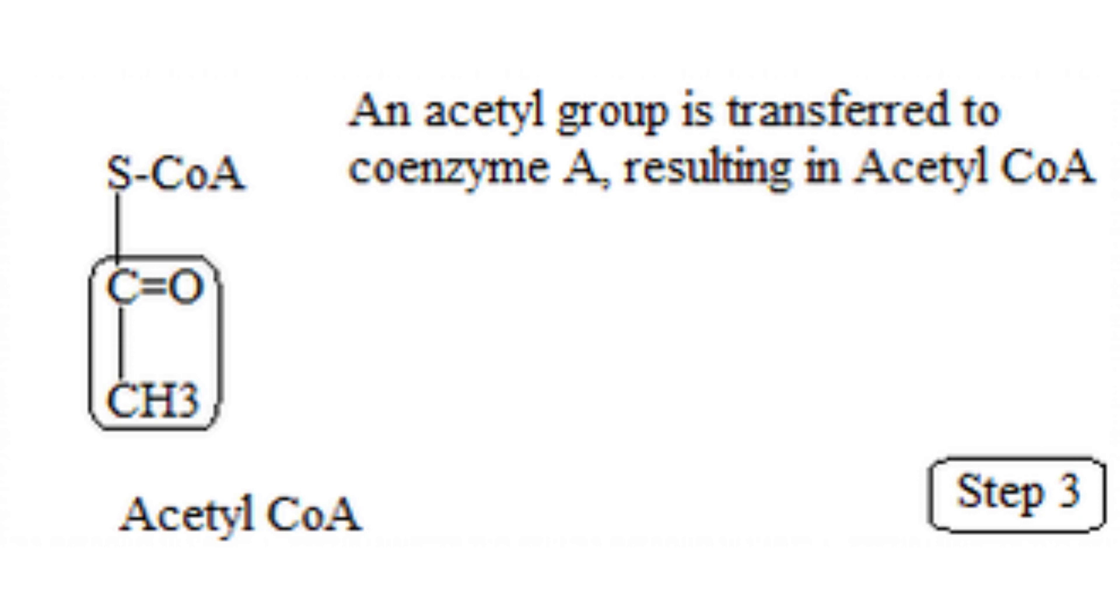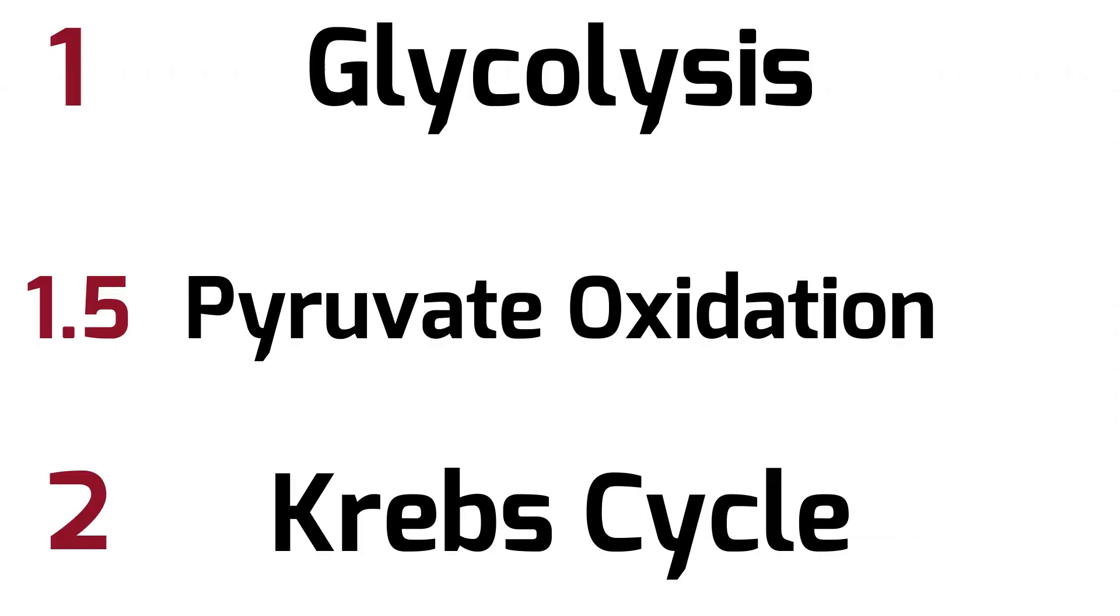Because we started with two pyruvate molecules, this whole process will happen twice, creating two acetyl-CoA molecules. Keep in mind that pyruvate oxidation isn't usually counted as a step on its own, because it's not as lengthy as the other steps. So think of it as a short bridge between glycolysis and the Krebs cycle. This is because we can't go from pyruvate to Krebs right away. We have to use the acetyl-CoA molecule as the first step in the Krebs cycle.